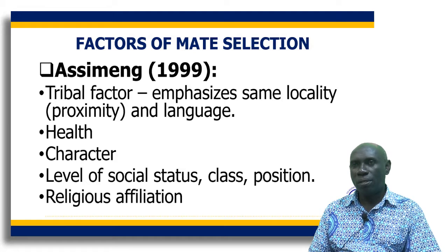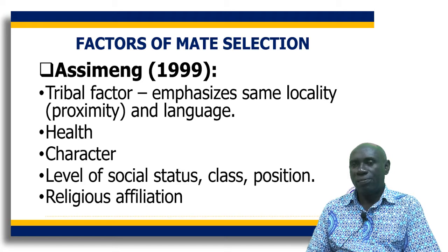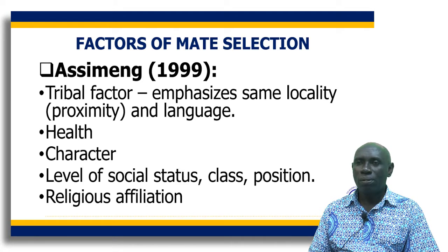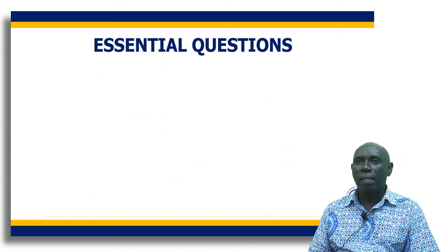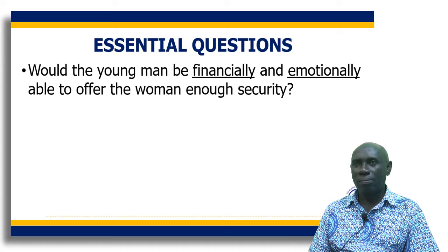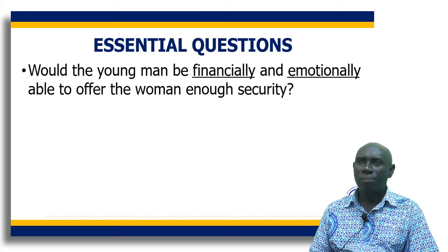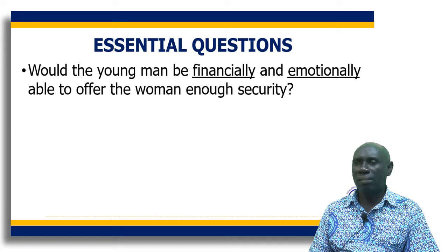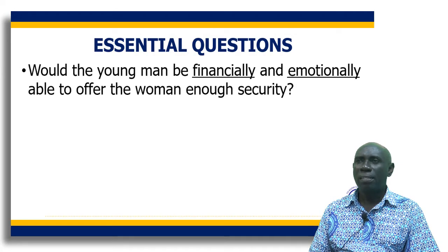Religious affiliation has also become a critical issue. Christians, for example, are exhorted by their pastors to marry Christians, and this is based on the biblical teaching that darkness and light cannot coexist. There are some questions that are often asked or considered. One of the questions is: would the young man be financially and emotionally able to offer the woman enough security? So the financial standing of the man, and also emotional stability — whether the person is emotionally strong to offer the woman the required security — are considerations.